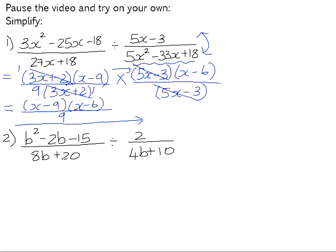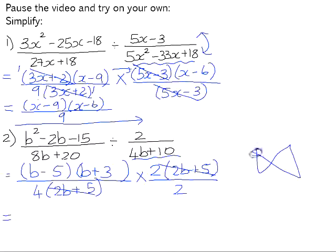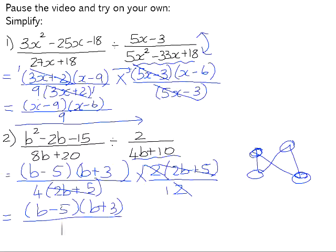Number 2: b² − 2b − 15 factors into (b − 5)(b + 3). 8b + 20 has a common factor of 4, leaving (2b + 5). Change the divide to a multiply: 4b + 10 becomes the numerator, which has a common factor of 2, giving 2(2b + 5). We cancel (2b + 5) with (2b + 5) using the bow-tie method, and the 2 divided by 2 is 1. That leaves (b − 5)(b + 3) in the numerator and 4 in the denominator.